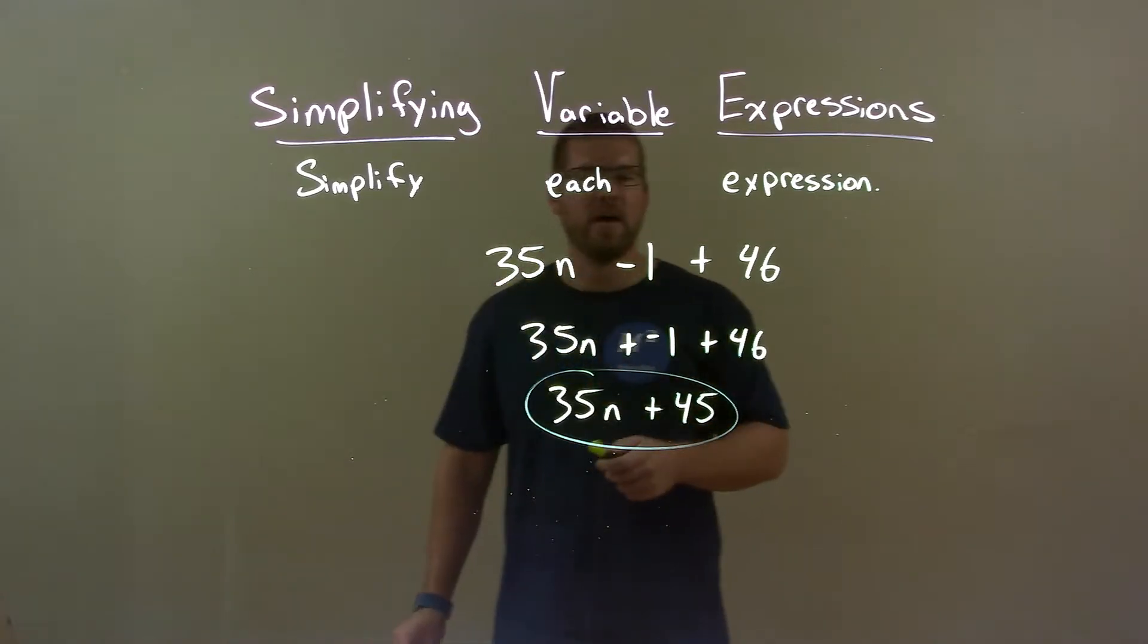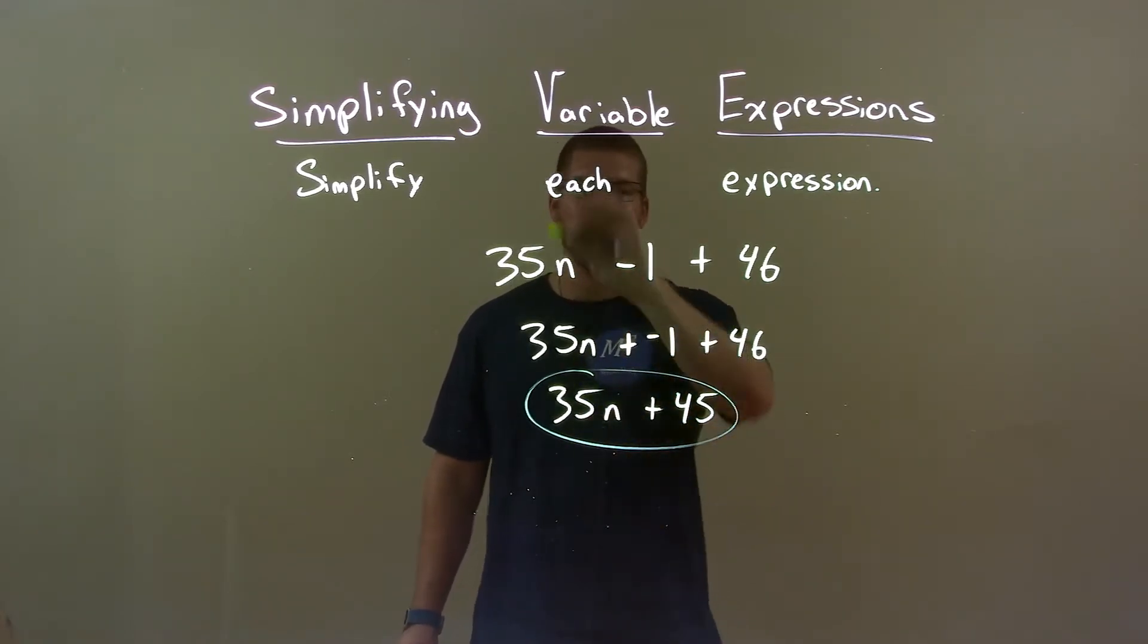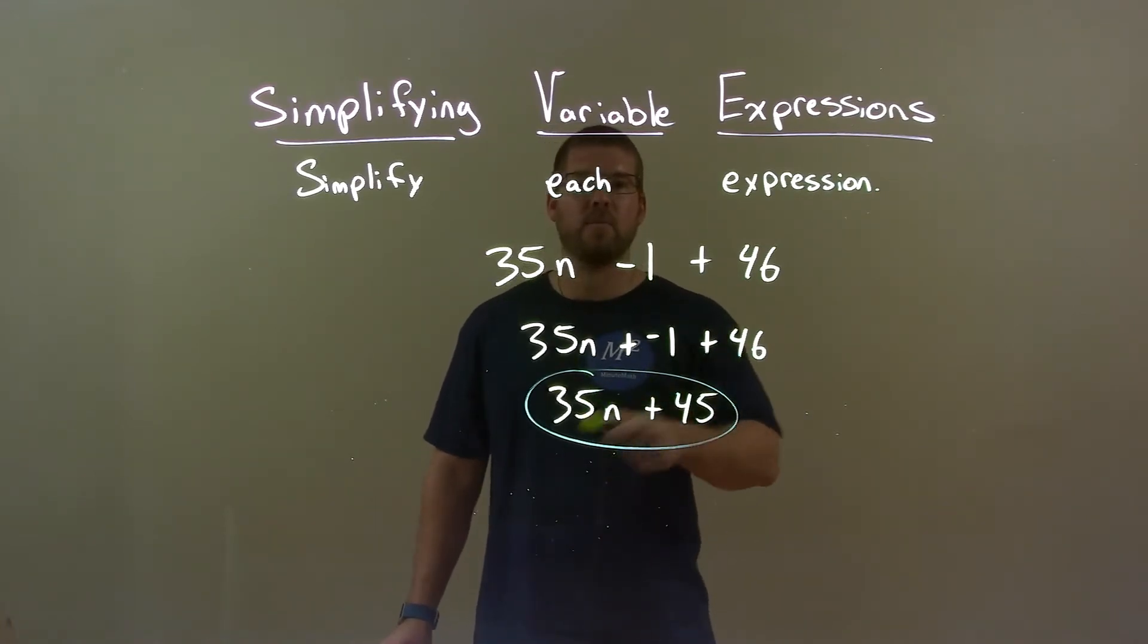Quick recap. We're given 35n minus 1 plus 46. Well, subtracting 1 is the same thing as adding a negative 1. Negative 1 plus 46 is 45. Bring down the 35n, so my final answer is 35n plus 45.